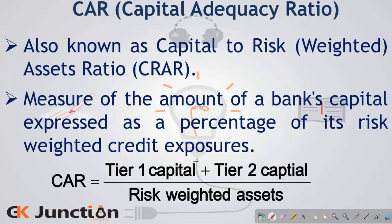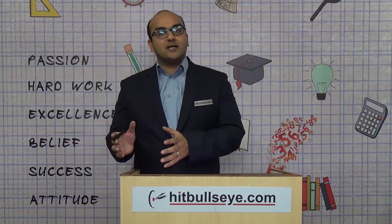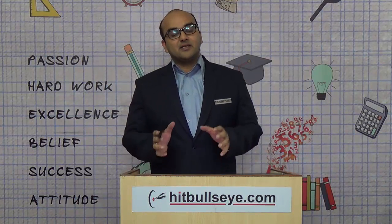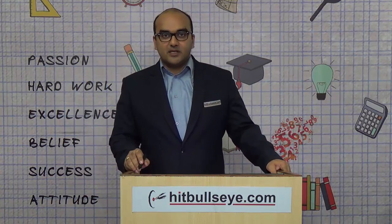Next is the Capital Adequacy Ratio, also known as Capital to Risk Weighted Asset Ratio or CRAR. It expresses the bank's capital as a percentage of its risk-weighted credit exposures. Basically, the amount of money that the bank has — that is its capital — divided by its risk-weighted assets gives the CRAR or Capital Adequacy Ratio. It measures the amount of risky exposure that the bank has.